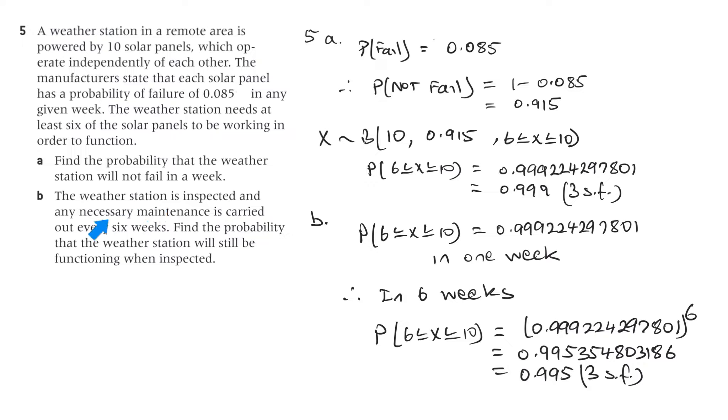Part B: the weather station is inspected and any necessary maintenance is carried out every six weeks. Find the probability that the weather station will still be functioning when inspected. Well, that's the probability that we found in one week. So that's what we have from part A. That's the probability of it not failing. And to fail means we have at least... To not fail, it needs at least six of them because they need that many to work for it to function. So what we found here was this is the probability of not failing here. And now we want to find the probability that the weather station will still be functioning when inspected, and the inspections carried out every six weeks. So if this is the probability of not failing in one week,